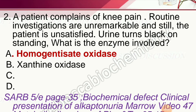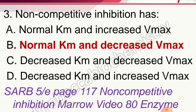Question 2: A patient complains of knee pain. Routine investigations are unremarkable and still the patient is unsatisfied. Urine turns black on standing. What is the enzyme involved? The answer is homogentisate oxidase.